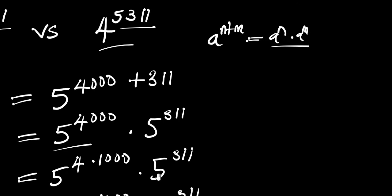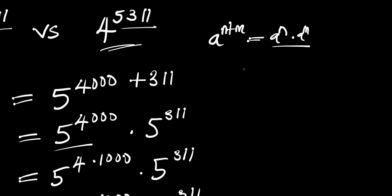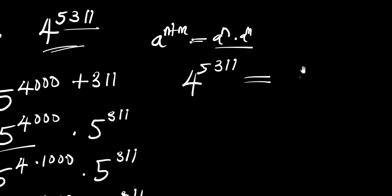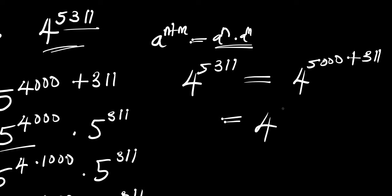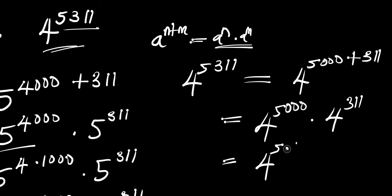Now let's consider the second number: 4^5311. We can rewrite this as 4^(5000 + 311). Applying the same identity, we get 4^5000 times 4^311, and then 4^(5 × 1000) times 4^311.